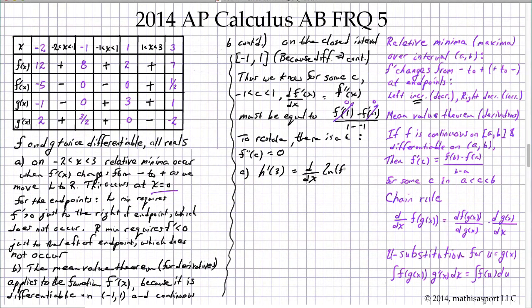And by the chain rule, d by dx of ln of f of x is the same as d of ln of f of x where we first differentiate that entire composed function with respect to f of x and then we multiply it by the derivative of f of x with respect to x, all of that evaluated at x equals 3.